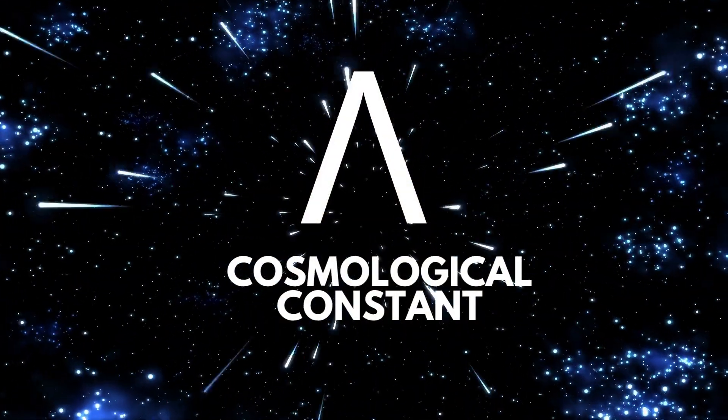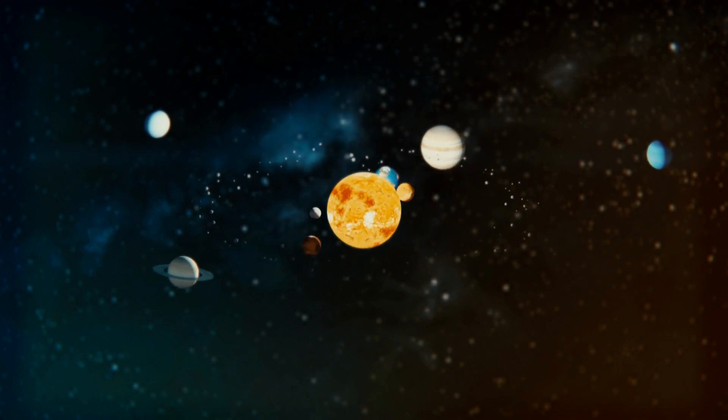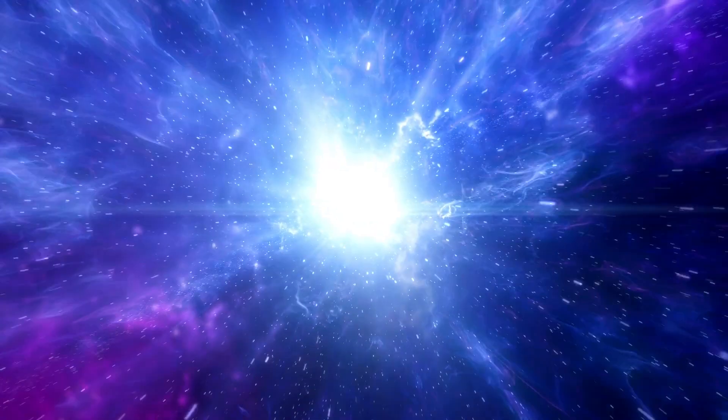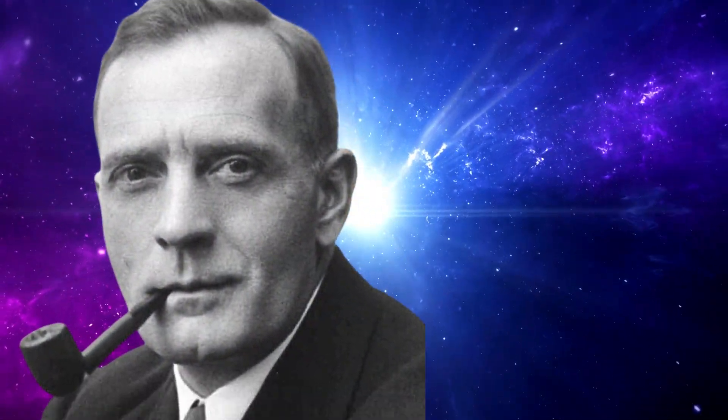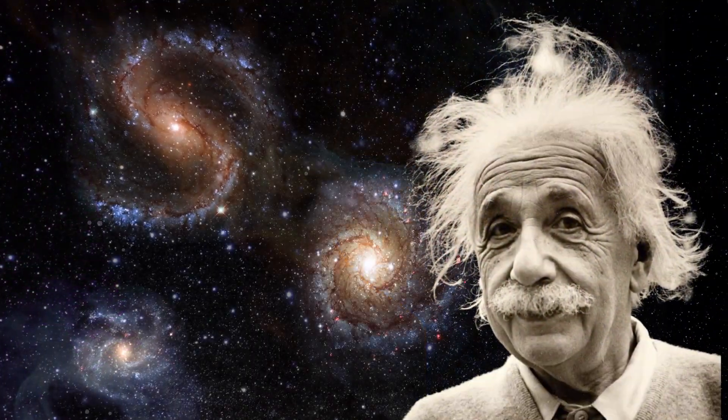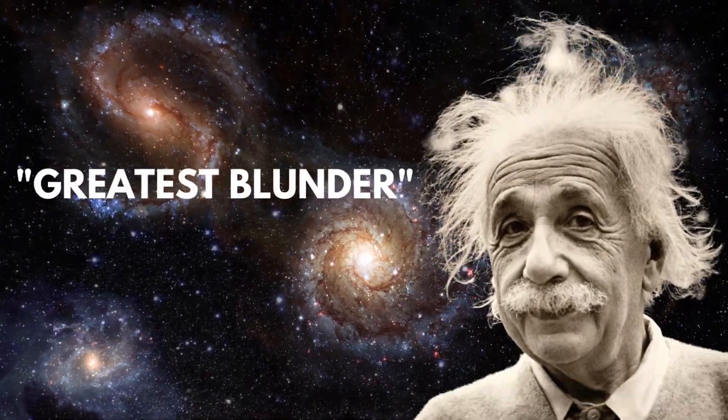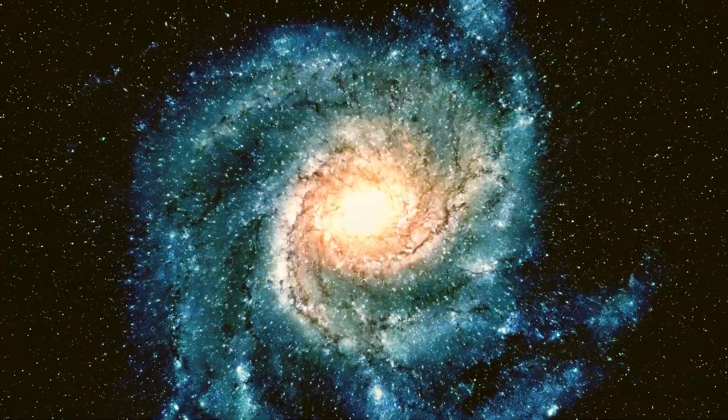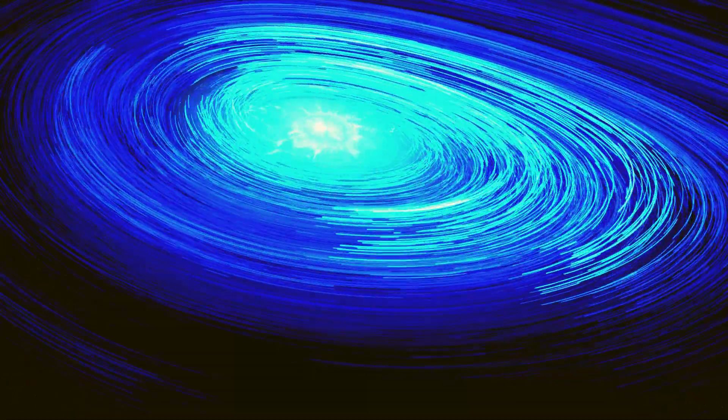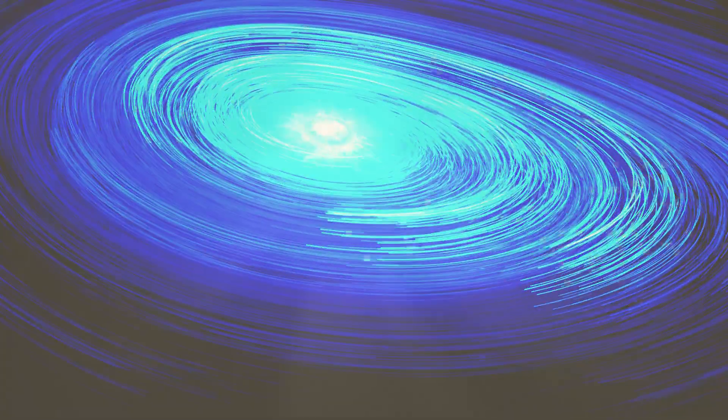In 1917, Einstein assumed that the universe was static and included a cosmological constant in his general relativity equations. However, this assumption was later proven incorrect by Edwin Hubble's discovery that the universe was actually expanding, rendering the constant unnecessary. Einstein famously referred to this as his greatest blunder, and it caused a major shift in the scientific community's understanding of the universe's dynamics and nature, paving the way for the development of modern cosmology.